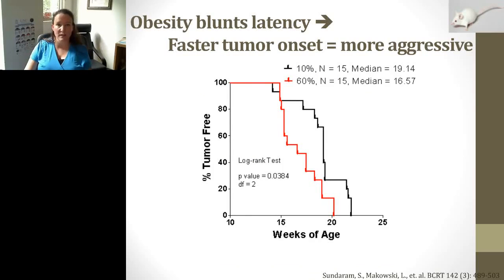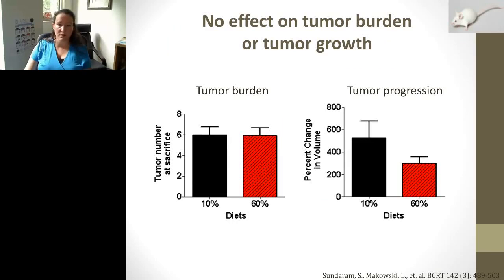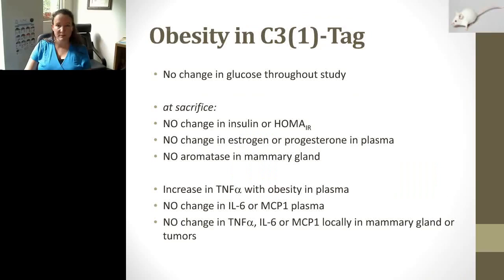We showed that the high-fat diet induced obesity — increases in body weight and doubling of fat mass by MRI. Our key finding was that obesity blunted latency: we saw faster tumor onset in high-fat diet obese mice, with a shorter time to tumor. We did not see significant changes in tumor burden or progression. Metabolic findings included no changes in glucose, insulin, HOMA, estrogen, progesterone, or aromatase in the mammary gland. We saw a significant increase in TNF-alpha in plasma, but no change in IL-6 or MCP-1, and no local changes in cytokines or chemokines in mammary glands and tumors by Luminex.